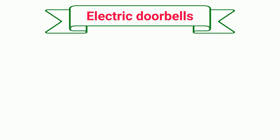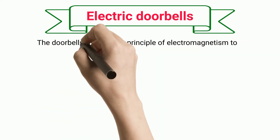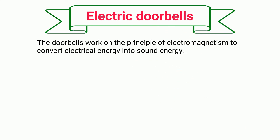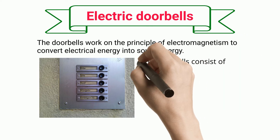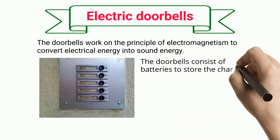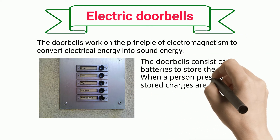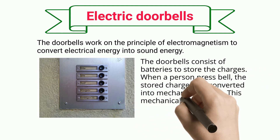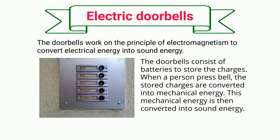Electric doorbells work on the principle of electromagnetism to convert electrical energy into sound energy. The doorbells consist of batteries to store charges. When a person presses the bell, the stored charges are converted into mechanical energy, which is then converted into sound energy.